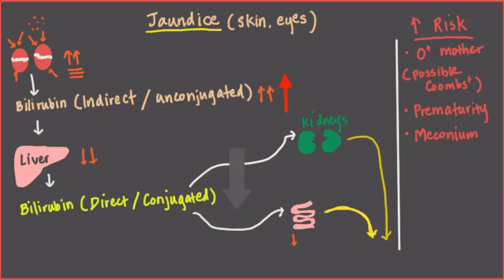Now meconium is not necessarily a risk factor for jaundice, but a baby that's still stooling meconium and hasn't transitioned yet tells us that the bilirubin is not able to exit through the gut yet.